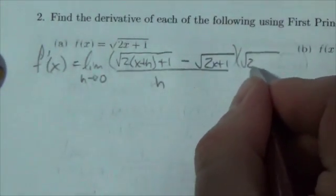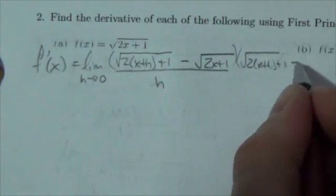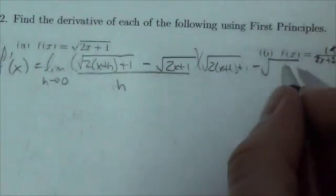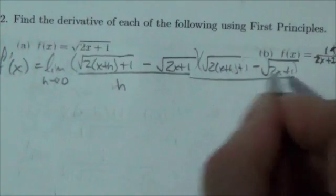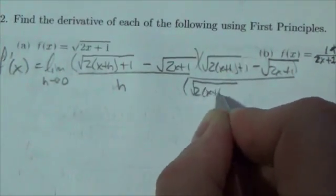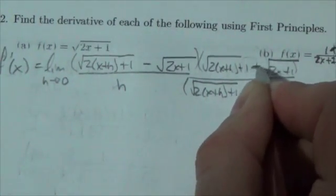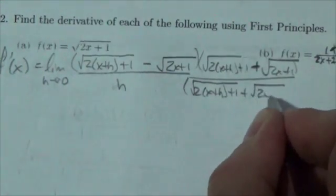I'm going to run out of room here by the square root of 2x plus h plus 1 minus 2x plus 1. Remember you can't just do it to the numerator. 2 times x plus h plus 1 plus the square root of 2x plus 1.